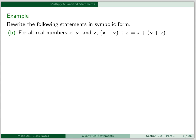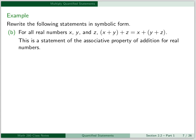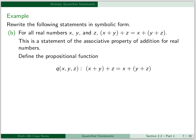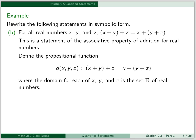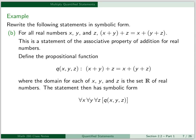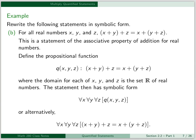For our next example, we have the statement: for all real numbers x, y, and z, x plus y quantity plus z is equal to x plus the quantity y plus z. This should also look familiar — this is a statement of the associative property of addition for real numbers. Define the propositional function q of x, y, z to be x plus y quantity plus z equal to x plus the quantity y plus z, where the domain for each of x, y, and z is the set R of real numbers. The statement then has symbolic form: for all x, for all y, for all z, q of x, y, z. Or alternatively: for all x, for all y, for all z, x plus y quantity plus z equals x plus the quantity y plus z.